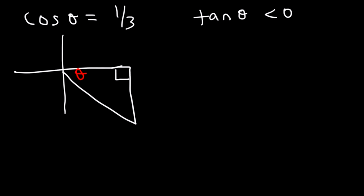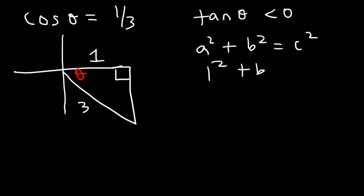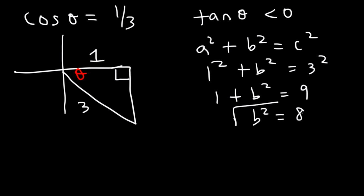Now, cosine is equal to the adjacent side divided by the hypotenuse. So if cosine theta is 1 over 3, then 3 is the hypotenuse and 1 is the adjacent side. Now we've got to find the missing side, so let's use the Pythagorean theorem. A is 1, we're looking for the missing side B, and C is 3. So 3 squared is 9, and 9 minus 1 is 8, so B is equal to the square root of 8. And 8 is 4 times 2, so B is 2 square root of 2 — that's the missing side.